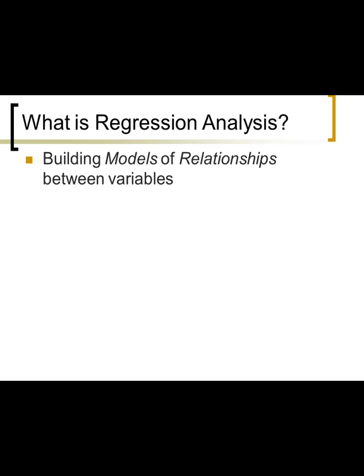Regression analysis is building models of relationships between variables. A model is an abstract thing that doesn't exist in the real world — it's purely theoretical, too perfect to exist. It's like the perfect prototype of the perfect boyfriend or girlfriend: it exists and it's perfect, but only in your mind. Real boyfriends and girlfriends will always be different to some extent, and different means worse, because the perfect one is perfect.